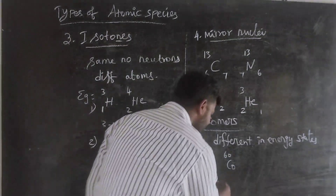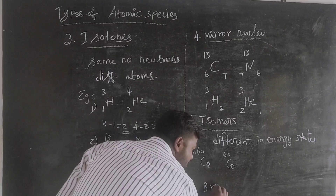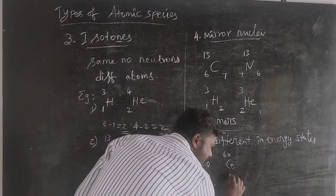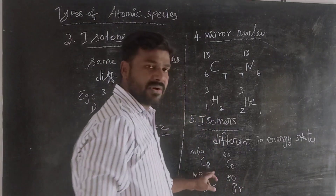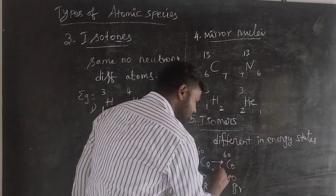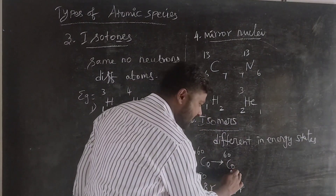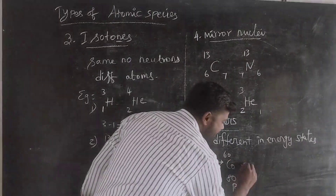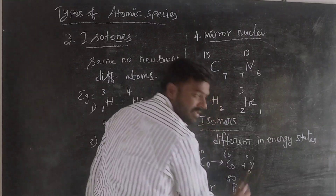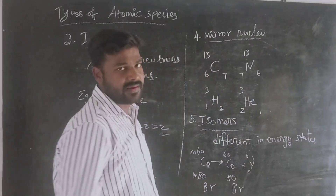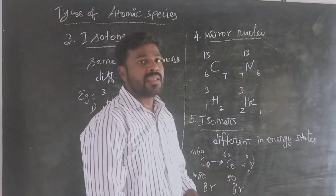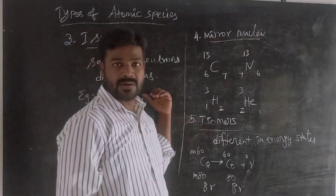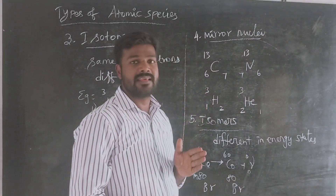Here is one example: bromine in a metastable state has the same mass number and emits gamma rays. Cobalt-60M and cobalt-60 are isomers. The basic isomers are at a low energy level, while the metastable isomers are at a high energy level. Isomers have the same atomic number and mass number but different energy states.